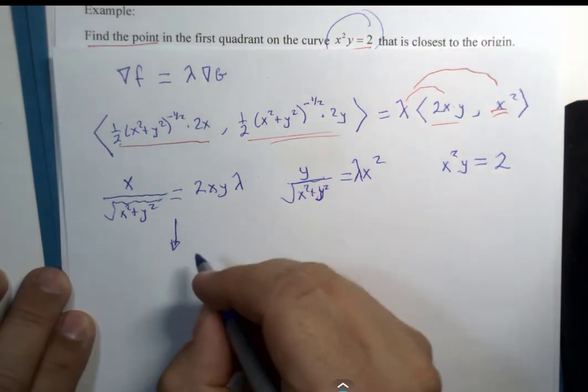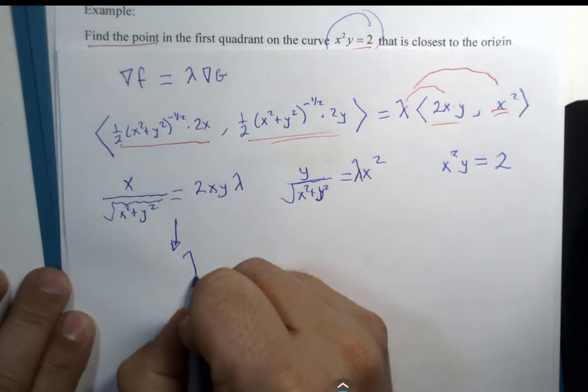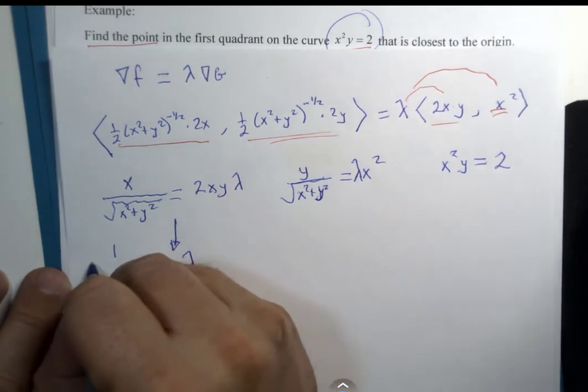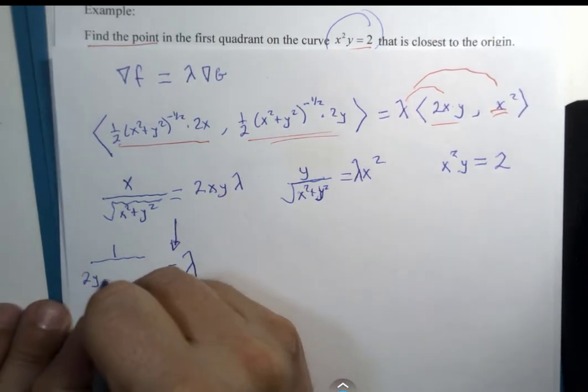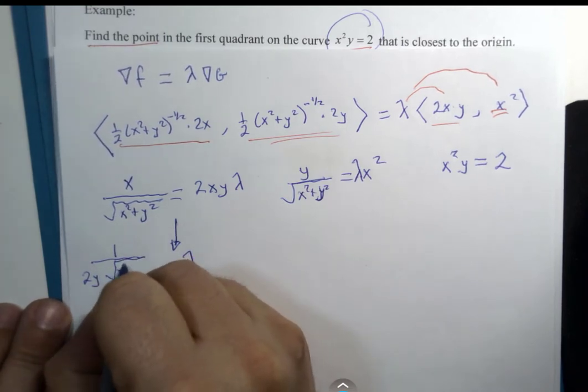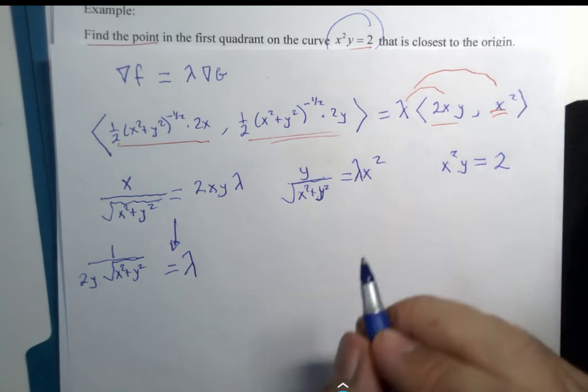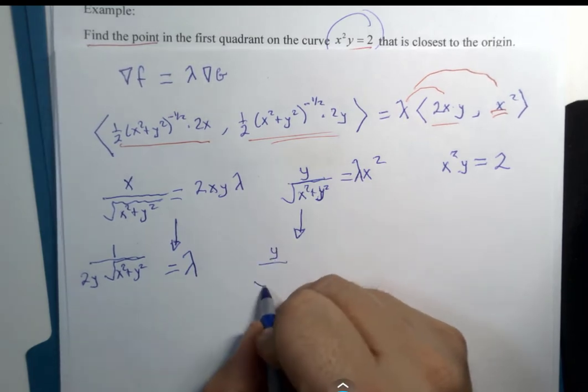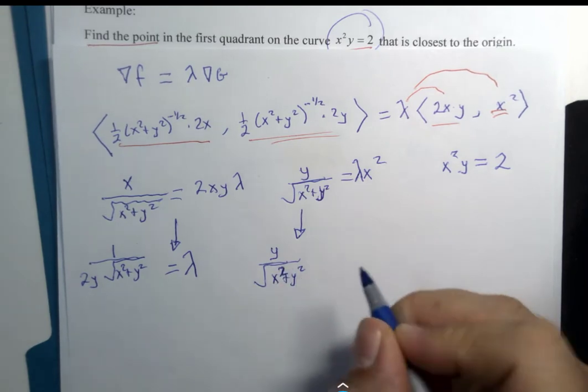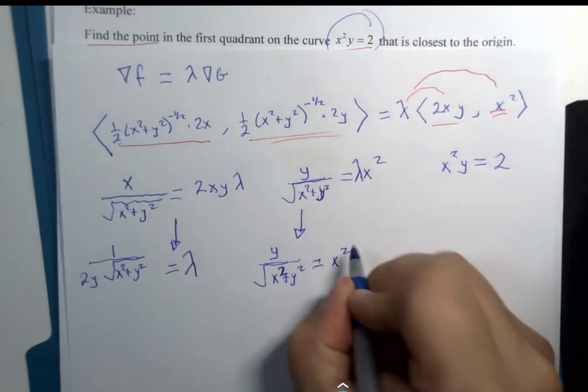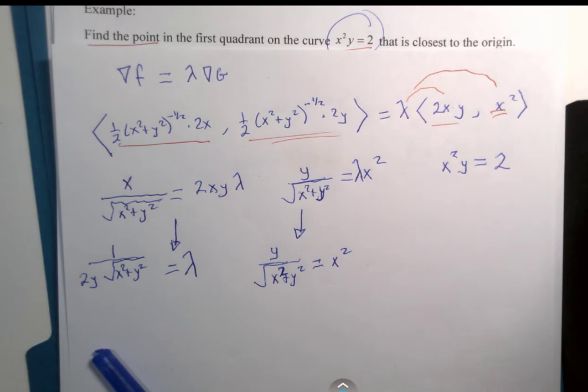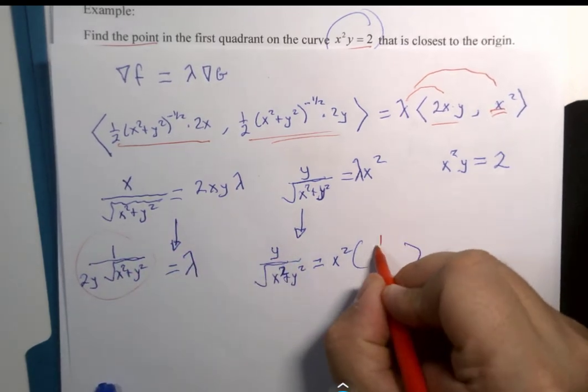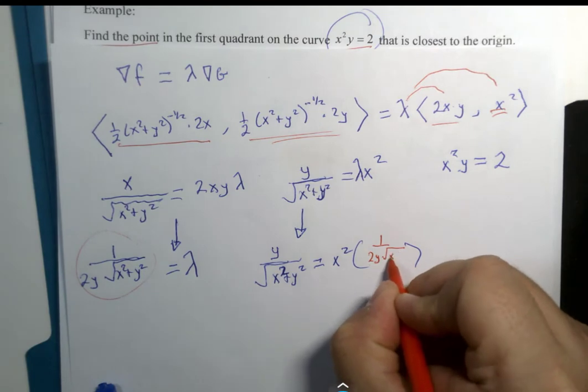Now, if you were to take this particular set of this equation here and solve it for lambda equals divide both sides by 2 times x times y, you will get 1 divided by 2y times x reduced square root of x squared plus y squared. And then, if you would take this equation here, y over square root x squared plus y squared equals x squared multiplied by lambda, but lambda is equal to this, 1 over 2y square root of x squared plus y squared.